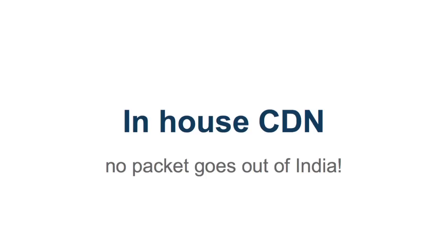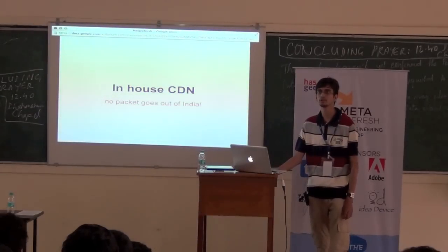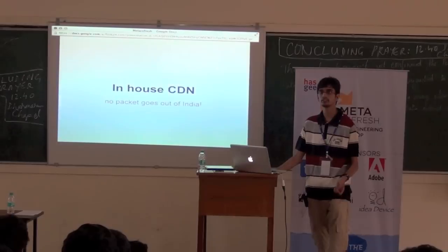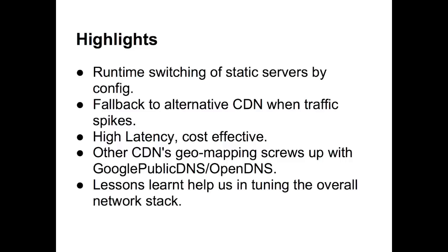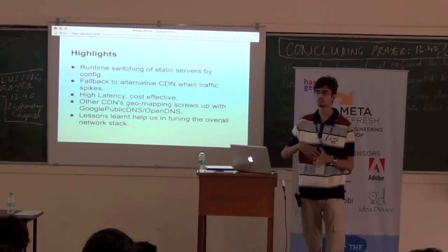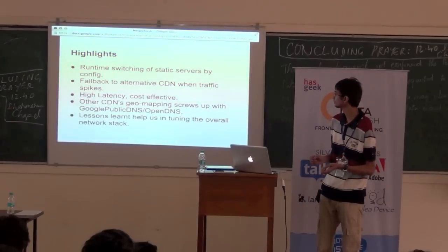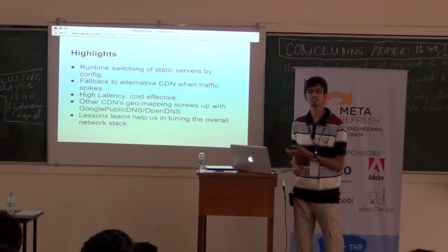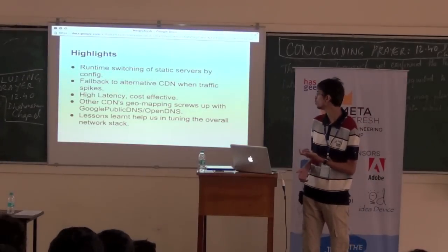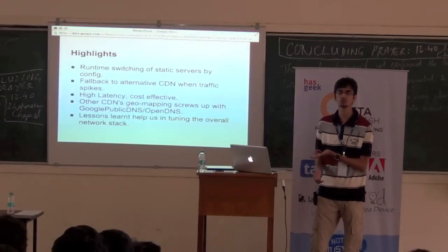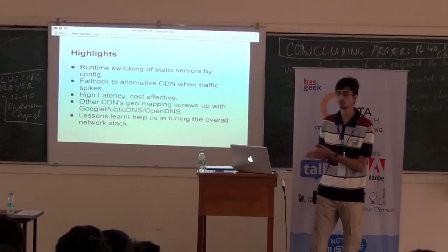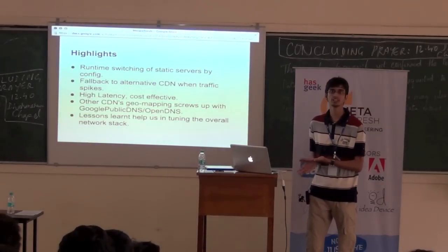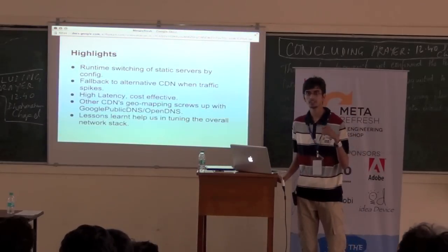On our CDN: we have our own CDN and don't use a third-party CDN for static files — no packet for Flipkart.com goes out of India. We can switch our CDNs at runtime through configs, so if there is high load or a CDN is non-performing, we can switch to an alternative provider or pull it out of rotation through configs. It gives us very low latency and is cost-effective because we are doing over 4 million pages a day. We also learnt that CDN geo-mapping breaks when people use Google DNS or OpenDNS — it no longer serves files from the nearest server. These lessons helped us fine-tune our data stack and other services.